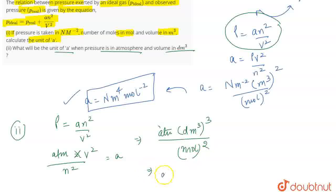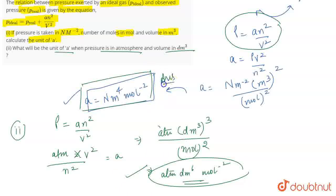So the unit of A becomes ATM dm to the 6 mol to the minus 2. So this becomes the unit of A when you take the pressure in ATM and the volume in dm cubed. So these are the answers when you have taken in Newton per meter squared and the second one is when you have taken the pressure in ATM. That's all for the question.